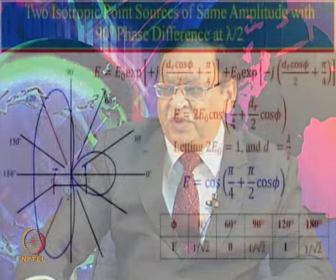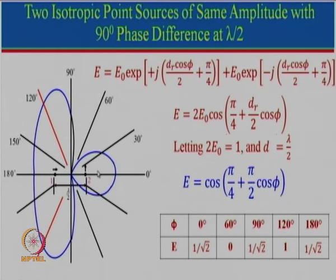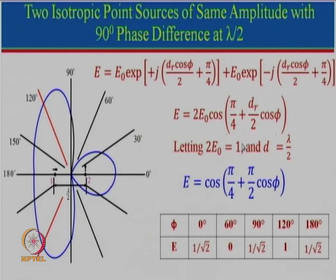Now let us take the next example where the two antennas are fed with equal amplitude but 90° phase difference. We will take two different cases of distance. First, when the distance is λ/2 and phase difference is 90° = π/2. We can take the phases as −π/4 and +π/4. Substituting the value of the phase difference, the equation gets modified — this is the combined effect where we put π/4 plus the rest of the term. This term is the same as before except for this additional 45° on one side. Normalizing with 2E₀ = 1 and taking D = λ/2, this gives the total field for two antennas with equal amplitude but 90° phase difference.